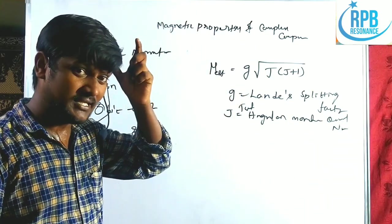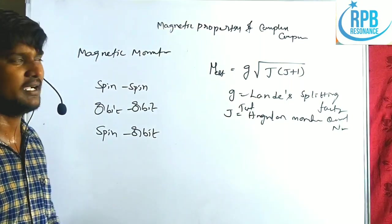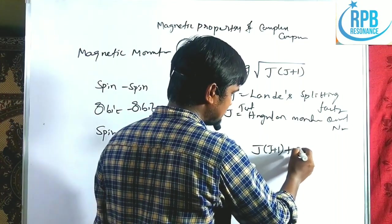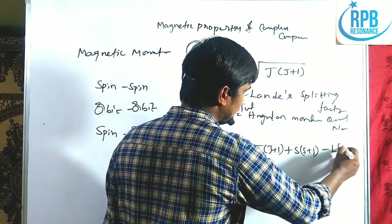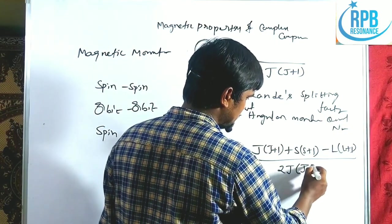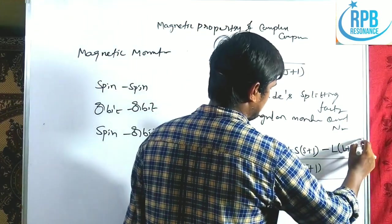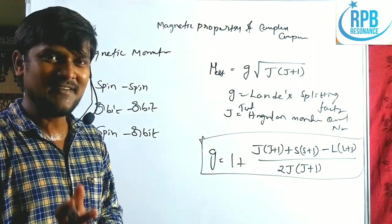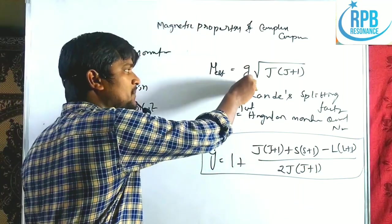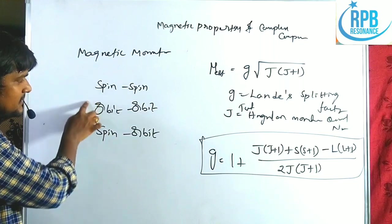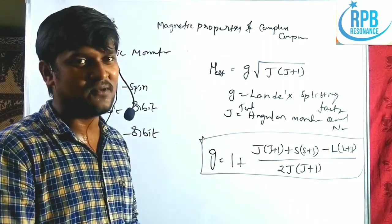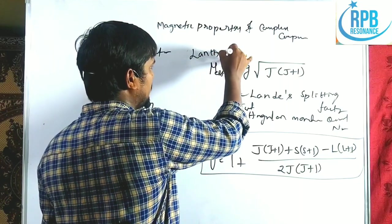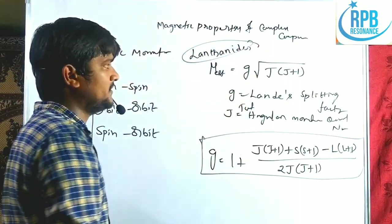The G value is given by: G = 1 + [J(J+1) + S(S+1) − L(L+1)] / [2J(J+1)]. This formula is used when the species obeys all three types of coupling interactions. The best examples of species exhibiting all three couplings are lanthanides. For lanthanides, μeff = G√(J(J+1)).